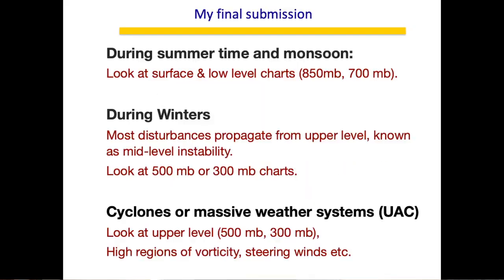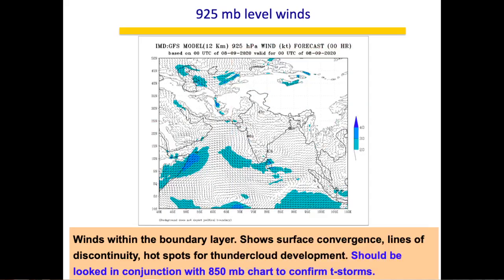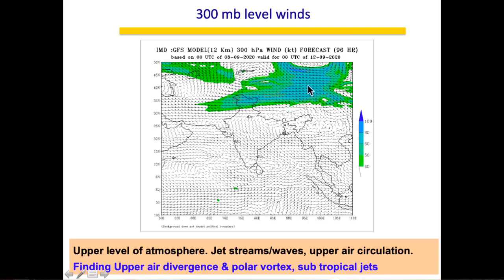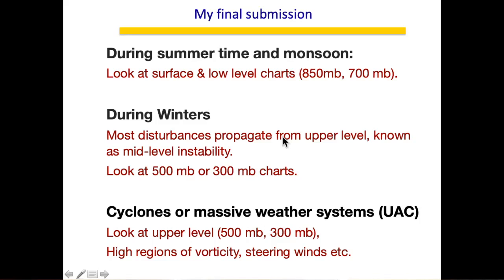During winters, the jet stream can dip down sharply. At 300 mb, if the jet stream dips into an area, that area will see intense weather in the form of winter rains or western disturbances. I look at 500–300 mb to predict whether a winter storm is coming or how nighttime temperatures will drop. At 500 mb the air is very cold, and if that cold air descends, a winter storm or sharp temperature dip can result.